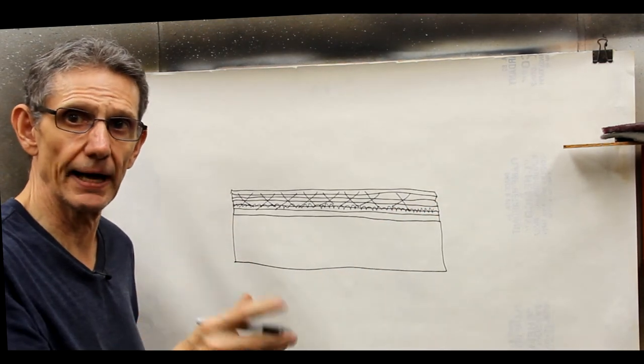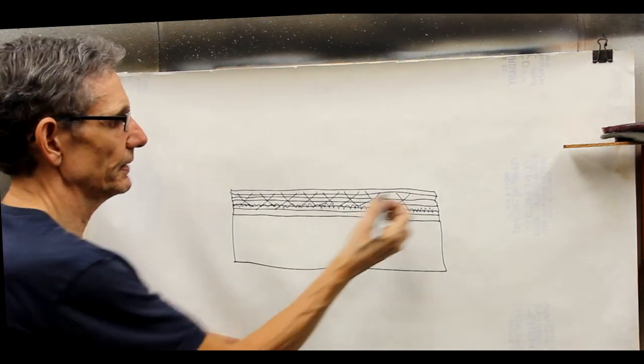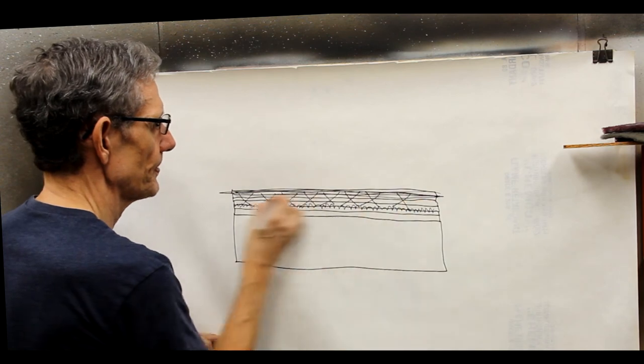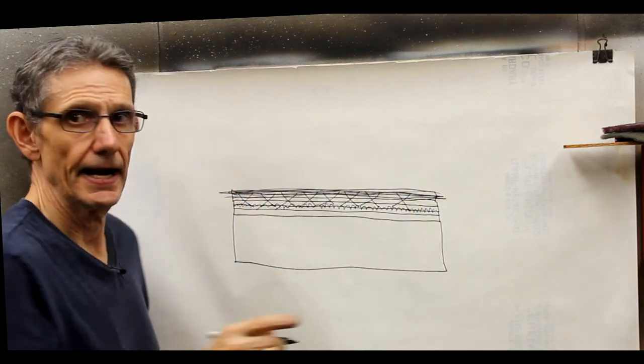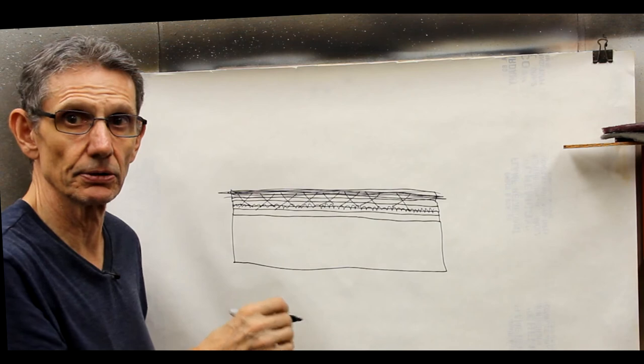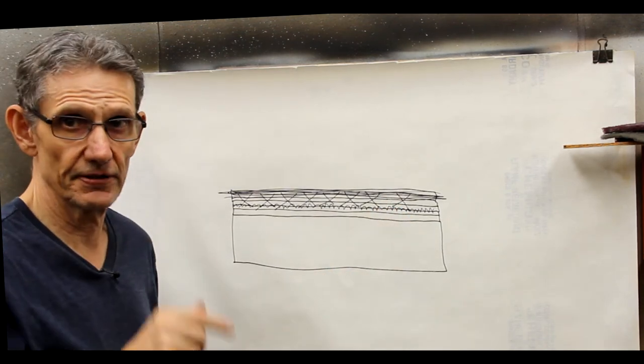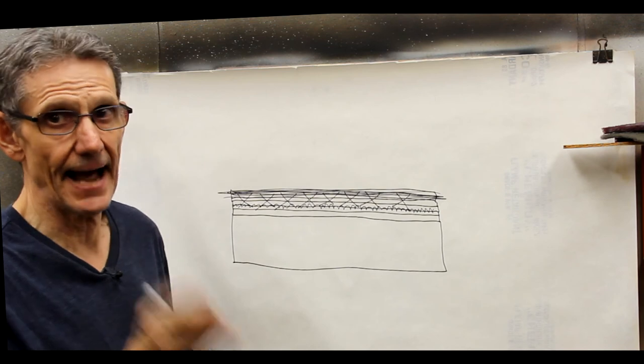Because when you start rubbing out by wet sanding and buffing, you're removing finish. And if you have a finish that doesn't burn in, you could get to one of these boundary layers, and that's a visible line in the finish, and that's not a good thing.